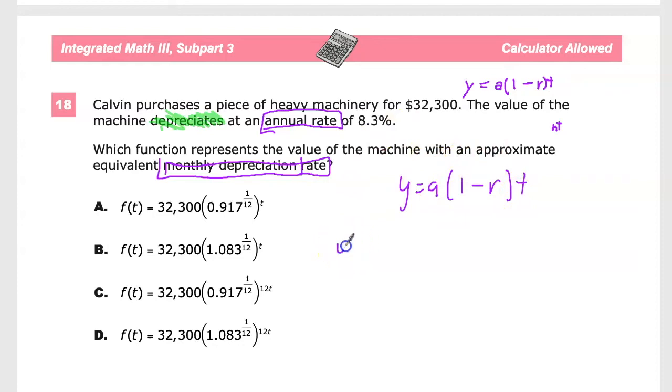So in this, y is equal to a is 32,300. One minus, here's where it becomes a little bit more like the interest formula.